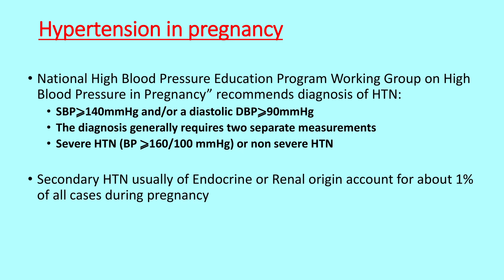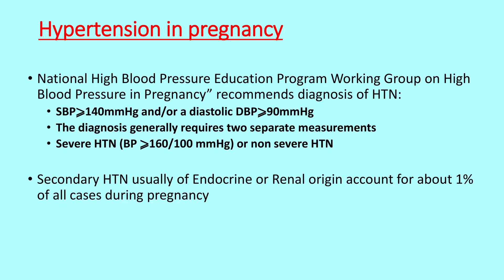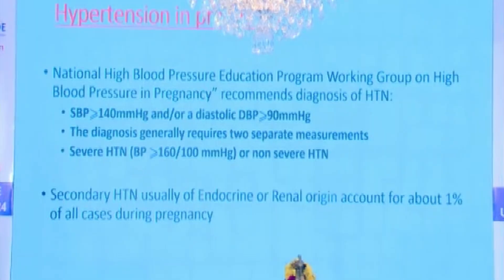How do we diagnose? Any systolic blood pressure more than 140 and/or diastolic more than 90, or diastolic more than 100 millimetres of mercury. If it is less than that, it is called non-severe hypertension. Secondary hypertension of usually endocrine and renal origin accounts for a small minority of patients, but they are a very important cause, accounting for about 1% of all pregnancies.